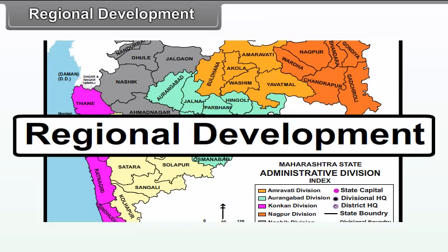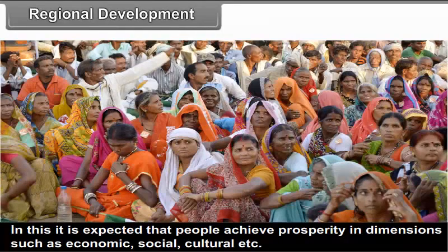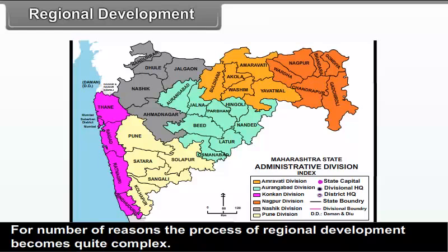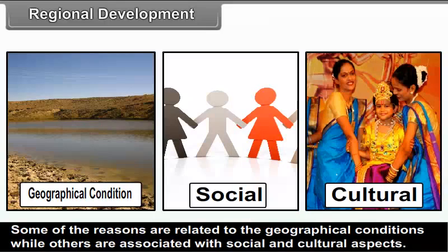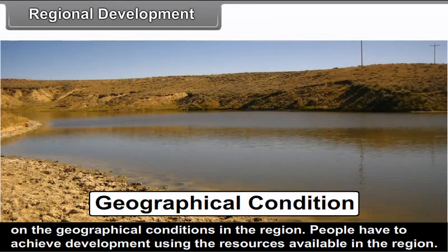Regional development means the development of people in a region, where people are expected to achieve prosperity in economic, social, cultural and other dimensions. For a number of reasons, the process of regional development becomes quite complex. Some reasons are related to geographical conditions, while others are associated with social and cultural aspects. The availability of natural resources as well as their qualitative and quantitative levels largely depend on the geographical conditions in the region.